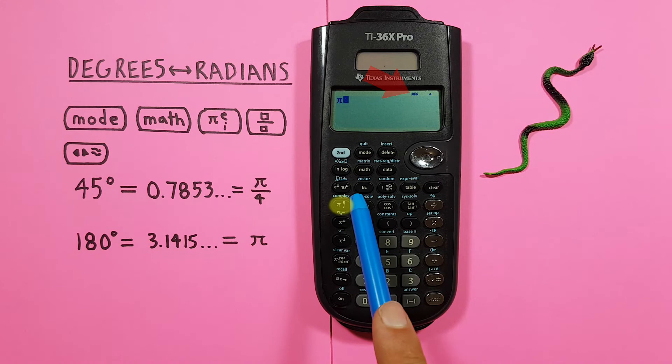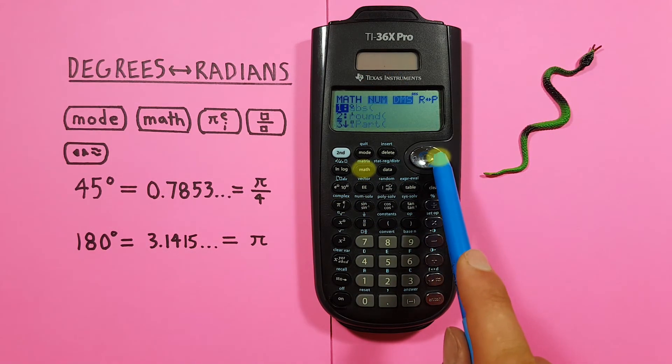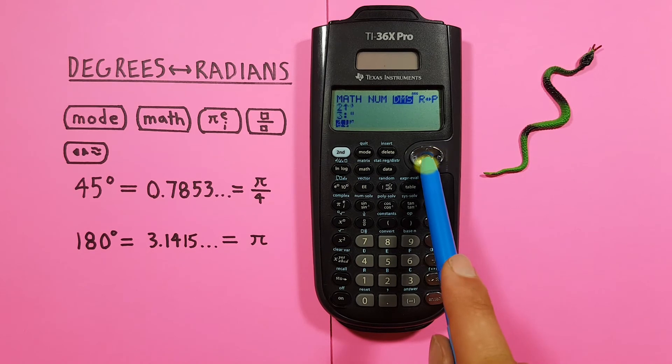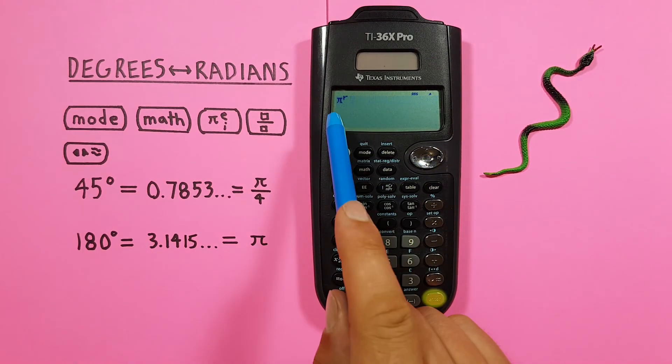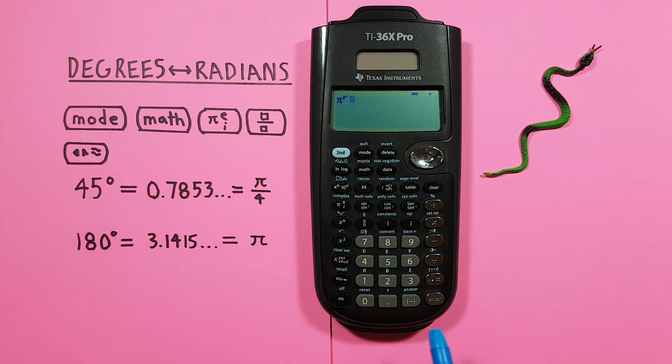See the DEG at the top of our screen. Then we enter our PI. And then Math. Scroll down to the R. So that our calculator knows this is PI radians.